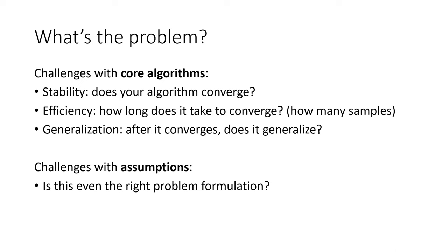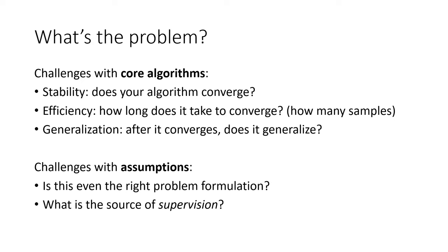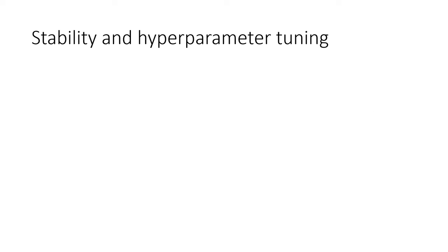Is RL actually the right problem formulation? Perhaps you'd like to solve a learning-based control problem, but some of the things that RL assumes don't fit cleanly. For example, maybe you don't have access to a ground-truth reward function. Somewhere, somebody needs to supervise the algorithm. Some forms of supervision tell the algorithm what you want, like the reward. Some serve to make learning easier, like demonstrations. Providing a well-shaped, non-sparse reward might serve both to specify what you want and how you want the method to do it.